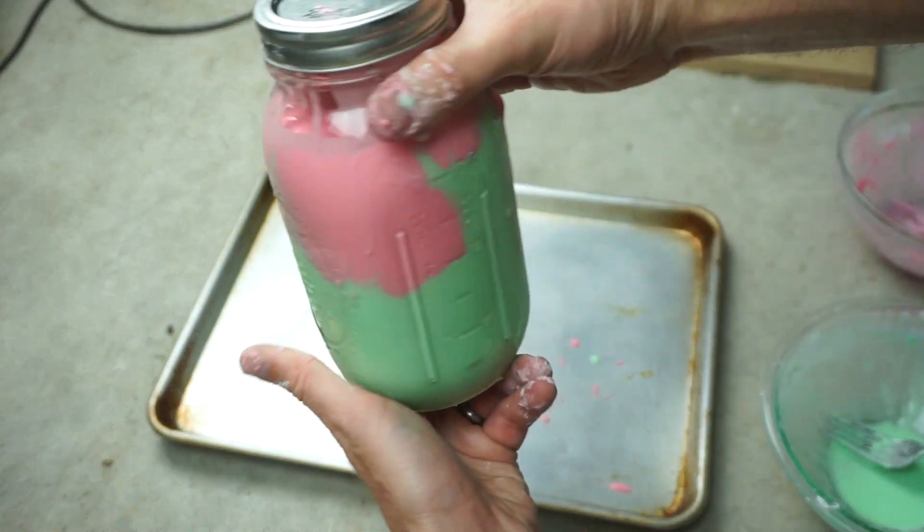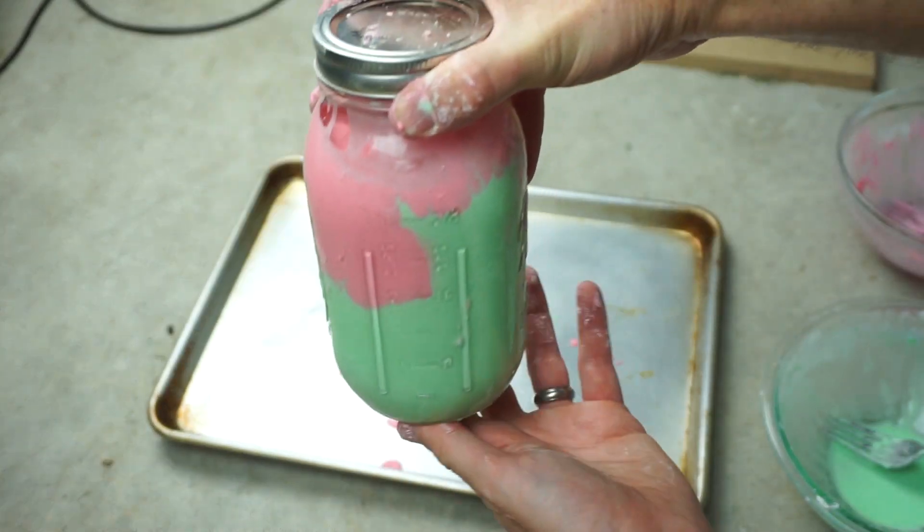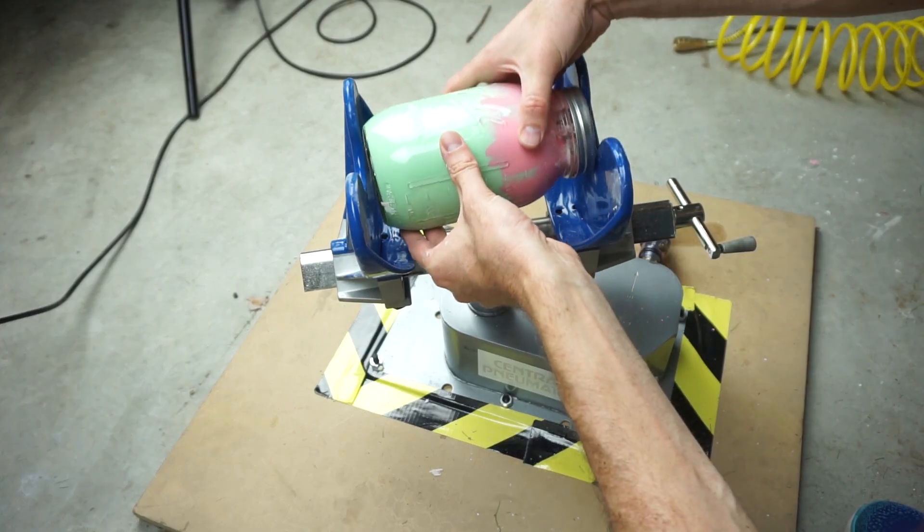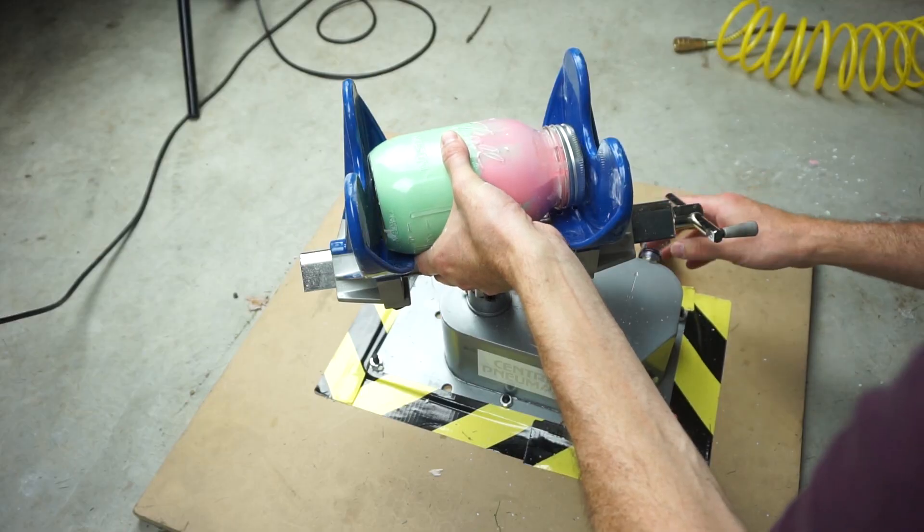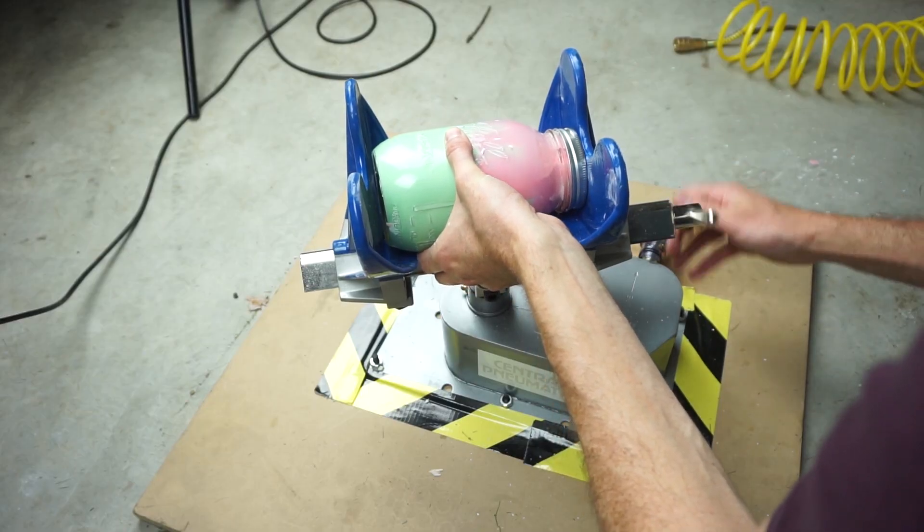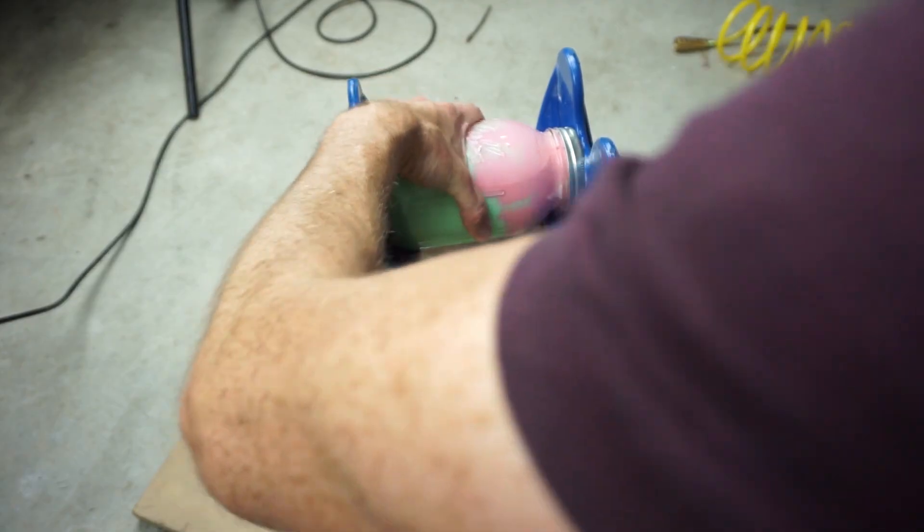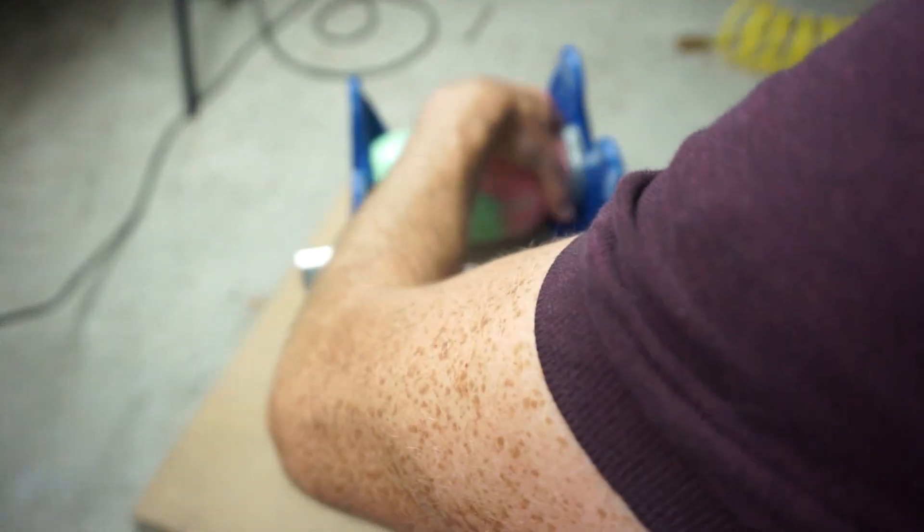Okay, one bottle of Oobleck. Let's see what happens when we get it in the paint shaker. Okay, let's load our Oobleck in. So now's the time, before I put it in the paint shaker, pause the video and make your prediction in the comments section on what you think is going to happen.